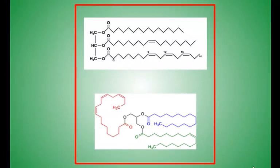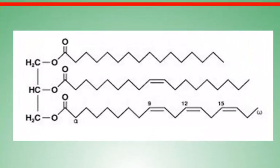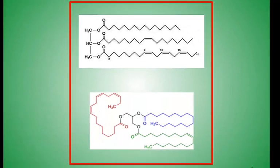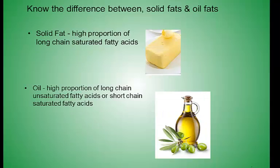Here's an example of a triglyceride that reacted with three different fatty acids: a saturated fatty acid, a monounsaturated fatty acid, and a polyunsaturated fatty acid. Verify that both structures shown are identical by finding the glycerol backbone and following the hydrocarbon chain of each ester group. Also appreciate that the hydrocarbon chains are not static or fixed — the carbon-carbon single bonds allow free rotation. Fats that are solid contain a high proportion of long-chain saturated fatty acids, while liquid fats or oils have a high proportion of unsaturated fatty acids.